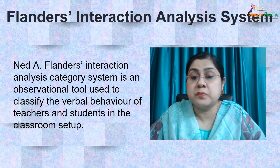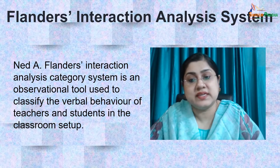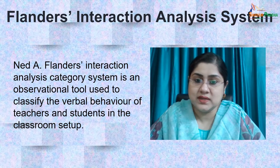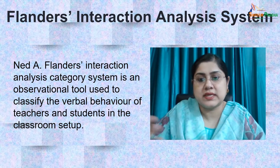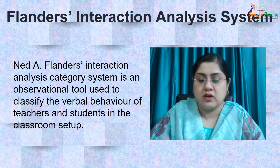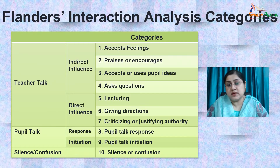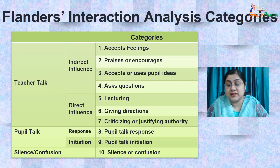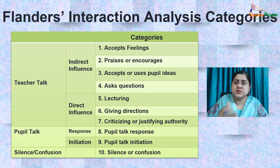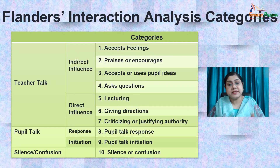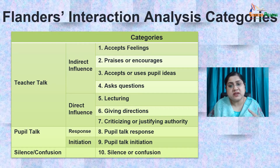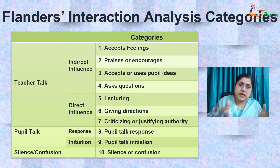Ned Flanders categorized the instruction of teachers and pupils in the classroom into 10 different categories of behavior, communication, and interaction happening inside the classroom. He first divided the entire communication into three broad categories: the first one is teacher talk, the second one is pupil talk, and the third one is silence or confusion. He then divided these three major categories into 10 different sub-categories.